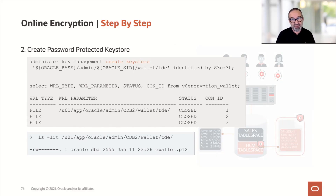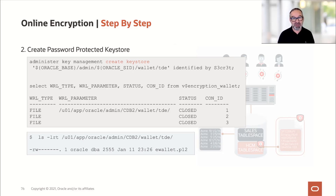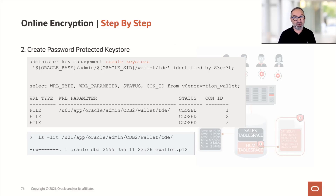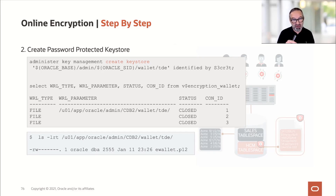We create the key store identified by a very secret password. Then I can check and see the wallet is closed, but there is a wallet associated with the database. In this case it's a multi-tenant database, so CON_ID 1 is my root container, CON_ID 2 is PDB$SEED, and CON_ID 3 is my PDB. When I check on the file system, I see that once I created that key store, I now have the ewallet.p12 file on disk.